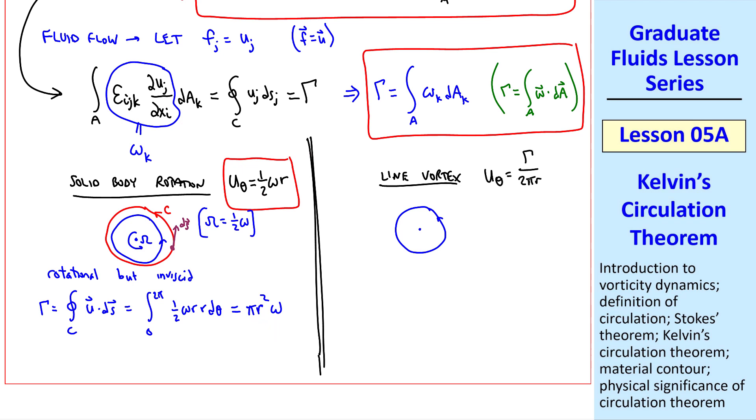For the line vortex, u theta is gamma over 2 pi r, where gamma is the circulation. Whereas solid body rotation was rotational but inviscid, the line vortex is irrotational, except at the origin, where the vorticity is infinity. But it's not inviscid. Viscous stresses are not zero. So this flow is irrotational but viscous.